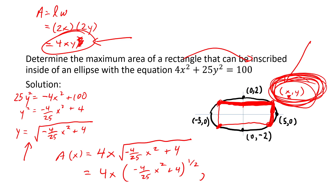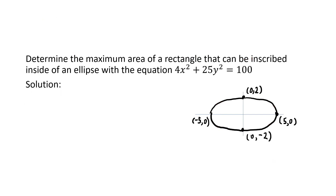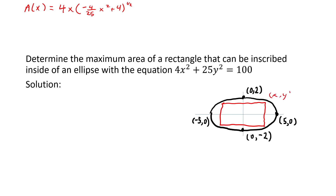Since x and y must be a point in the first quadrant, x must be between 0 and 5, so the domain is 0 < x < 5. To summarize: A(x) = 4x · (−(4/25)x² + 4)^(1/2), with 0 < x < 5.